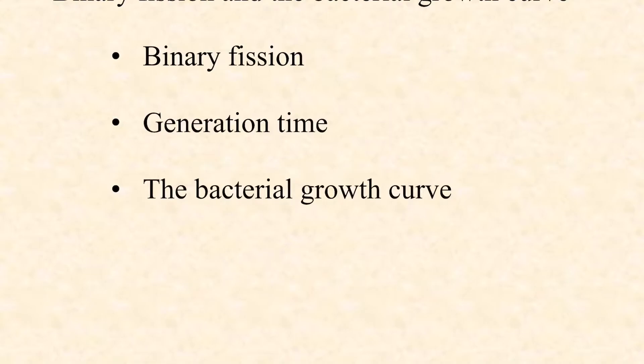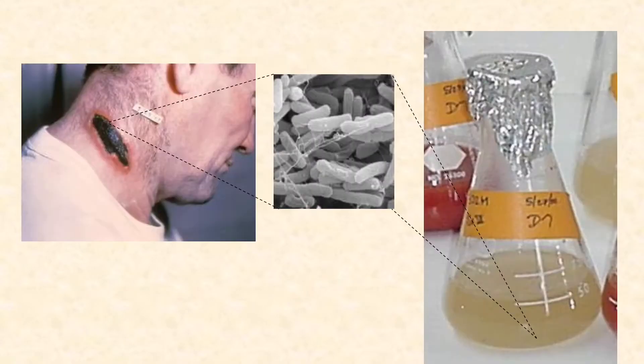We're going to think very briefly about the process of binary fission, one cell becoming two, and the bacterial growth curve. In other words, what are the stages that bacteria go through when they're growing in what we think of as a closed ecosystem, one in which no new nutrients are being supplied and waste products are accumulating? That becomes important in the case of our infections. Under most conditions, they really mimic this closed ecosystem idea unless they have access to the bloodstream, which acts more like an open ecosystem. In the midst of all this, we'll talk about the concept of generation time. Let's jump in and look at binary fission to begin with.